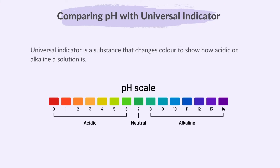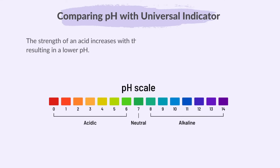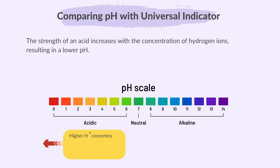Universal indicator is a substance that changes color to show how acidic or alkaline a solution is. It turns red, orange, or yellow in acids, green in neutral solutions, and blue or purple in alkalis. The strength of an acid increases with the concentration of hydrogen ions, resulting in a lower pH — so the higher the hydrogen ion concentration, the stronger the acid and the lower the pH.